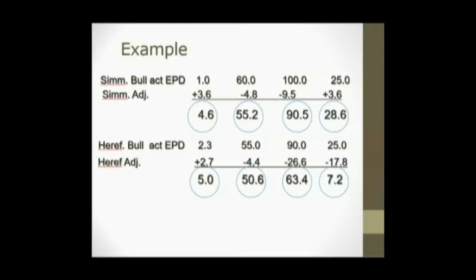Here's an example of how these may be used. Let's assume we wish to compare a Simmental bull to a Hereford bull for the EPDs of birth weight, weaning weight, yearling weight, and milk. We could use the adjustment factors from the previous slide to add to the EPDs of these two bulls, and after we do so, we could then fairly compare them. You'll see that both bulls had an EPD of 25 for milk within their respective breed associations, but after applying the adjustment factors, they differ substantially for this particular trait. That's why it's important when comparing bulls of two different breeds to use these values.